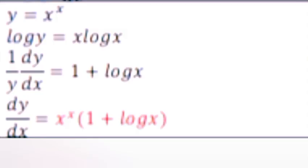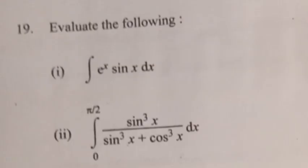Question 18.3: y = xˣ. Answer: Taking log: log y = x log x. Differentiating: (1/y)(dy/dx) = 1 + log x. Therefore dy/dx = xˣ(1 + log x).